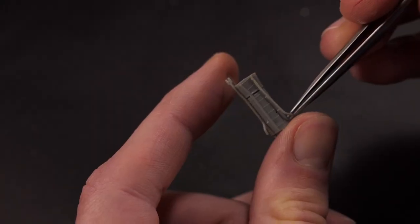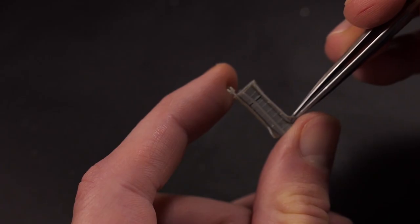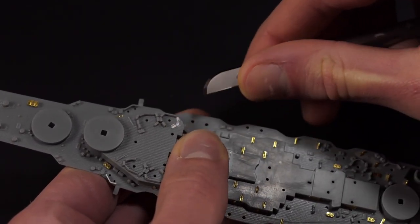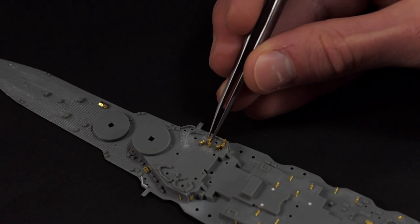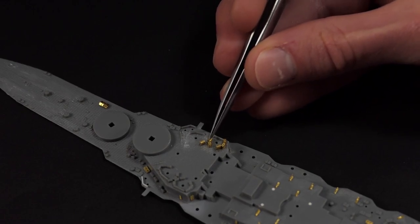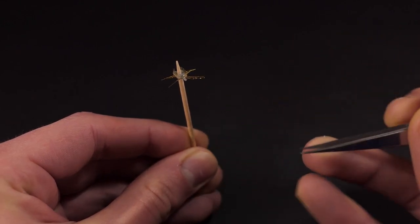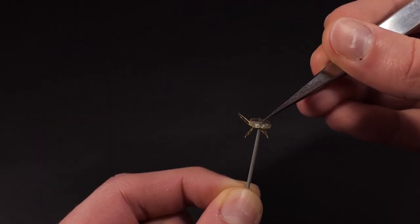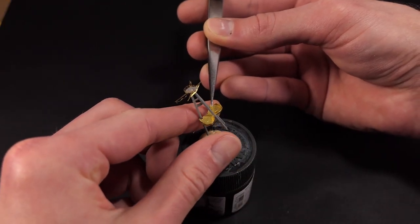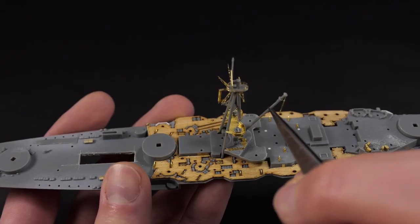The ammo boxes for all the guns are depicted as smooth rectangular prisms that are molded onto the deck, so I'll replace them with photo etch that I had to bend together, simply because one of the faces has some raised details that really come to life when you add a panel line wash.